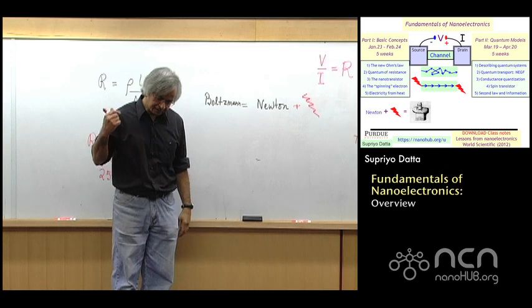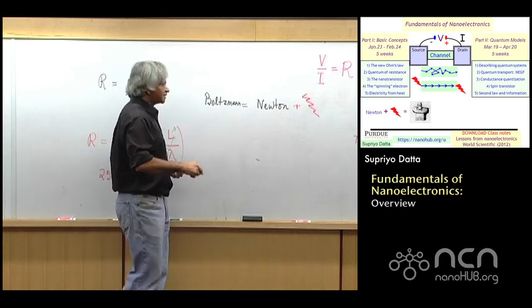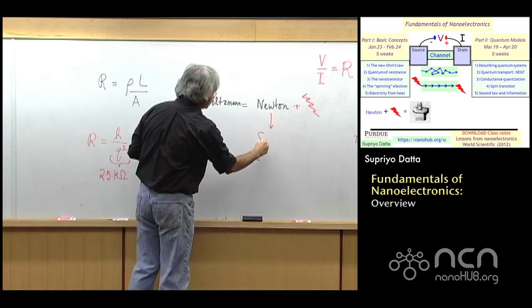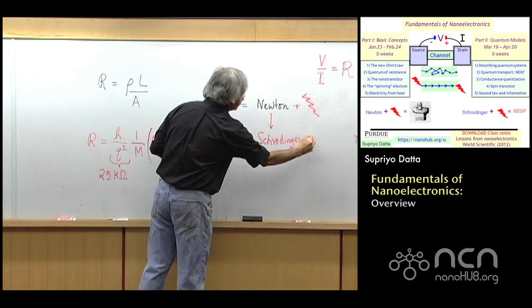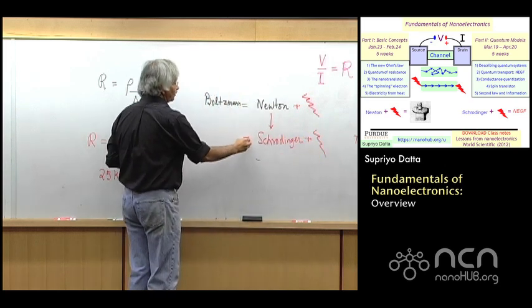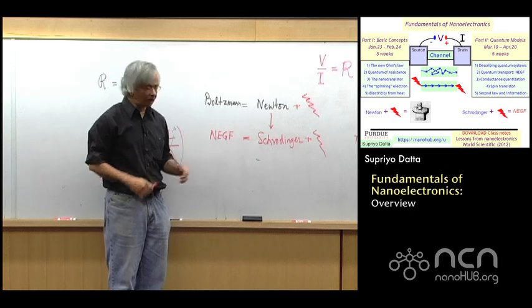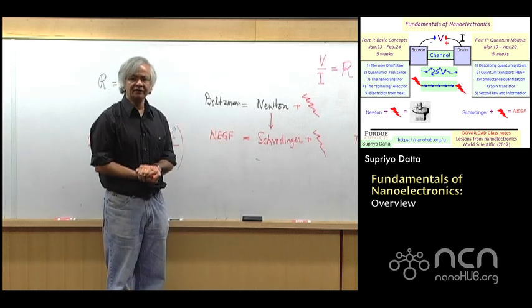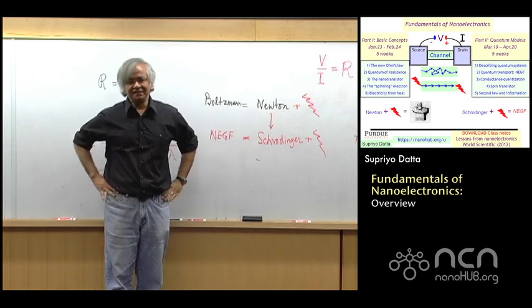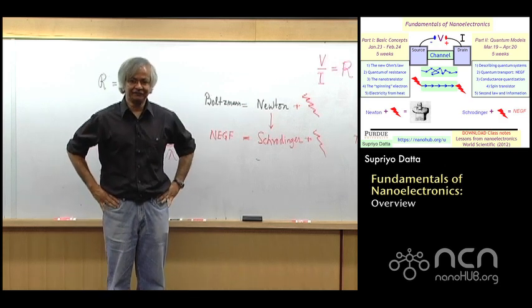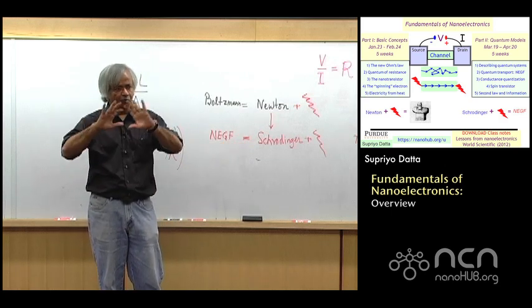And the second part of the course is kind of a quantum version of this. Boltzmann died I think around 1906, a little before quantum mechanics came along. And when quantum mechanics came along, Newton gets replaced by Schrodinger equation. But you still have to include these entropic processes like I mentioned. And when you add those two things, you get this non-equilibrium Green function method. That's widely used to analyze quantum devices. And that's kind of what we'll talk about in the second part of the course. But here too, when you take this course, it doesn't mean that you don't have to take any course on quantum mechanics. Absolutely not.